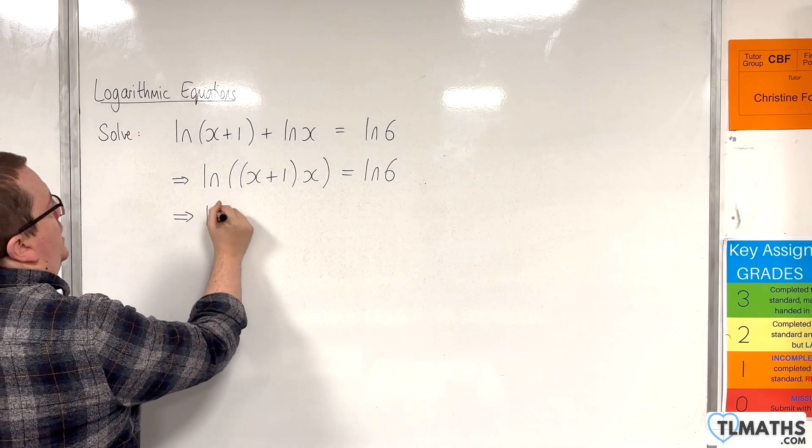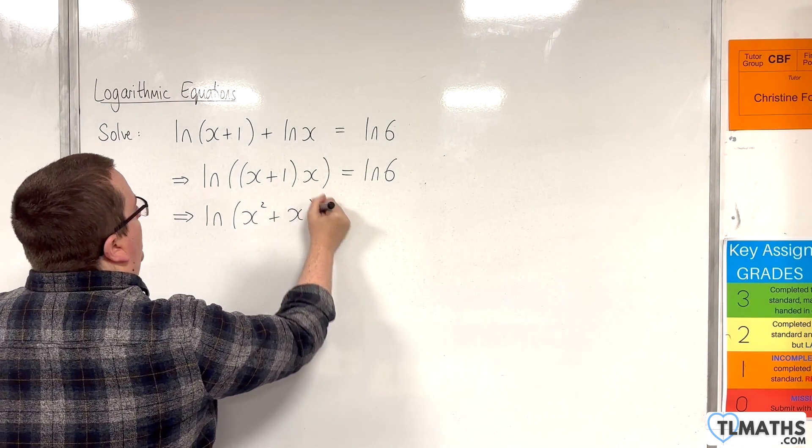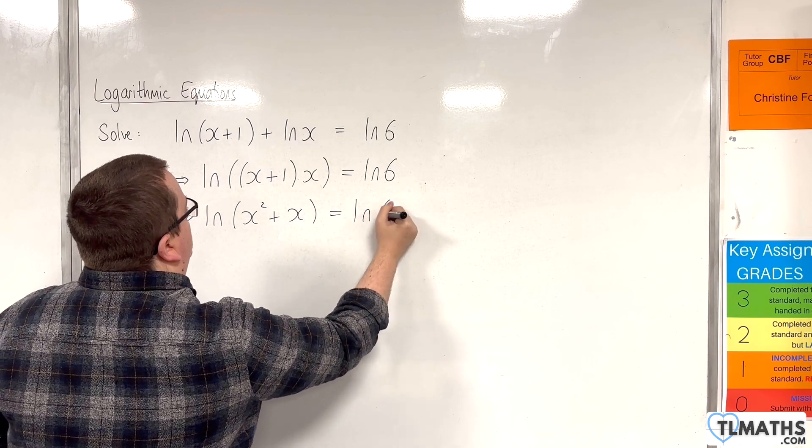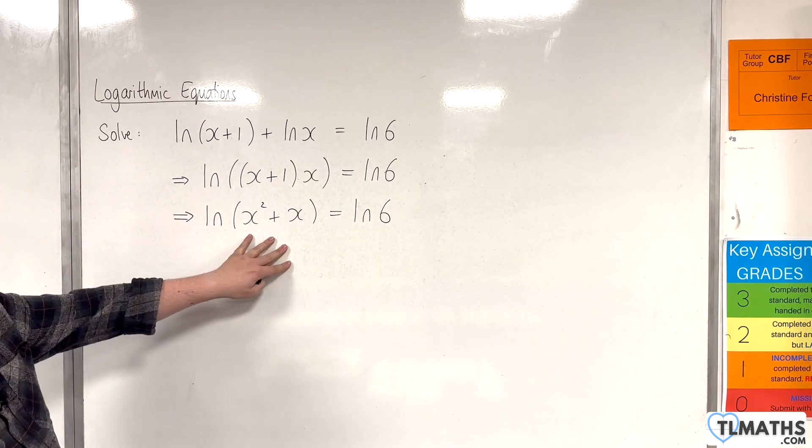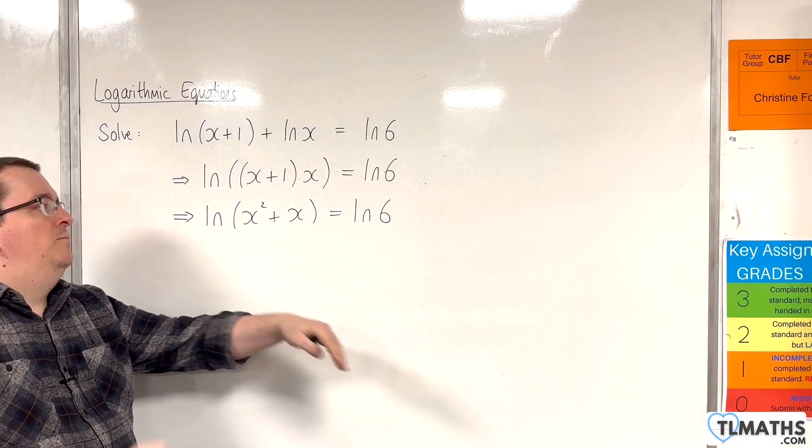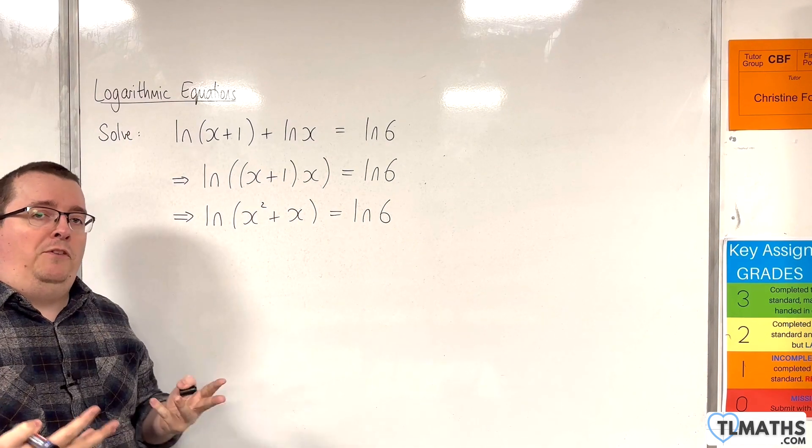So we have the natural log of x squared plus x on the left hand side. And now that we've got the natural log of something is equal to the natural log of something else, the x squared plus x would have to be equal to the 6.